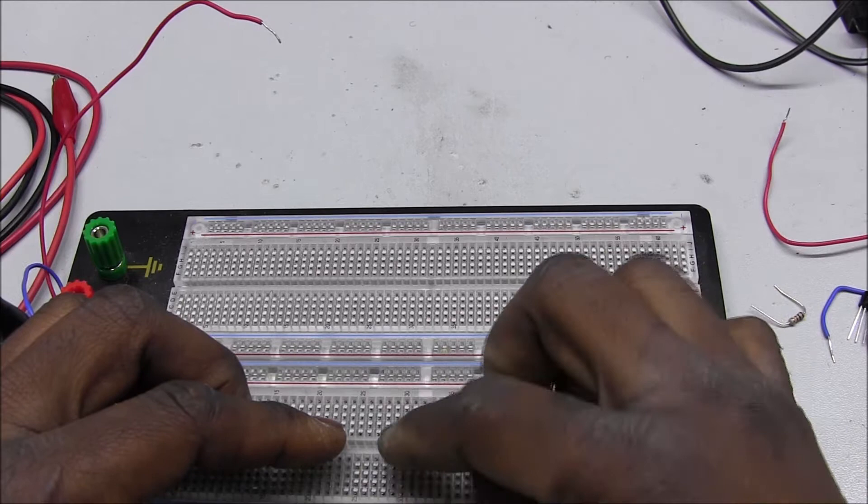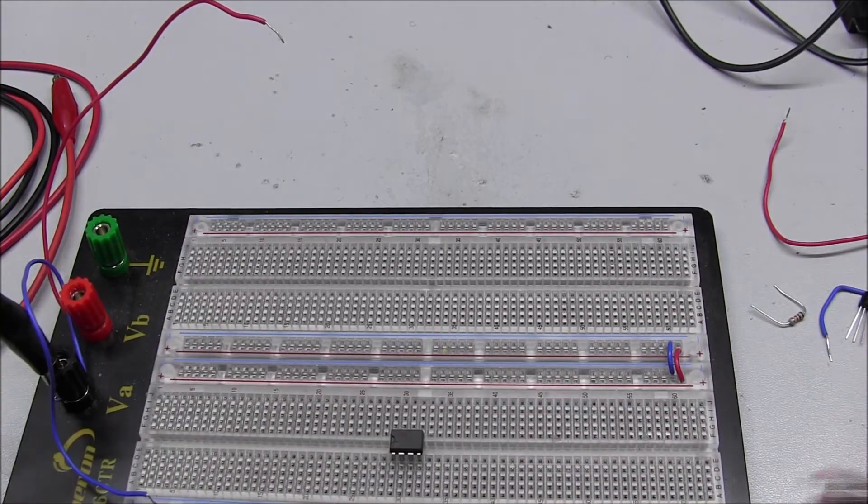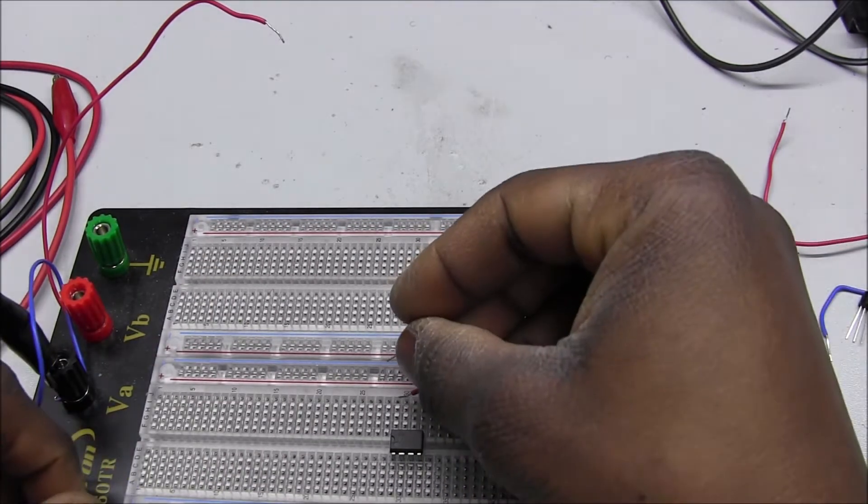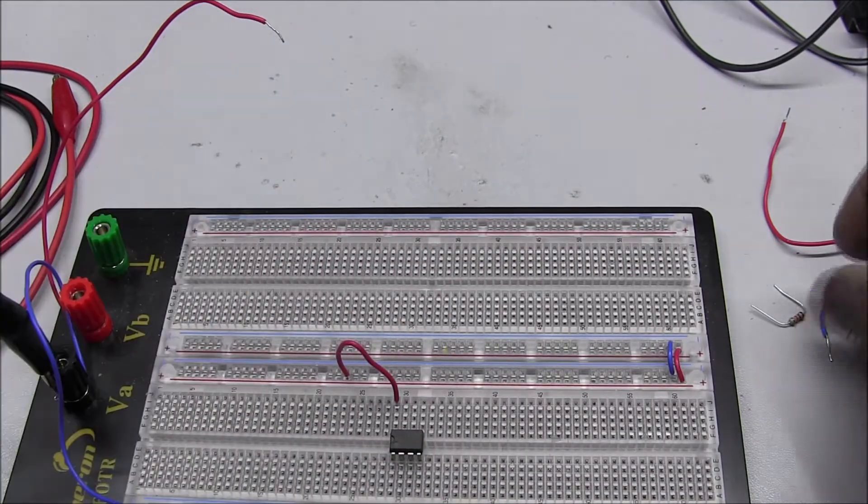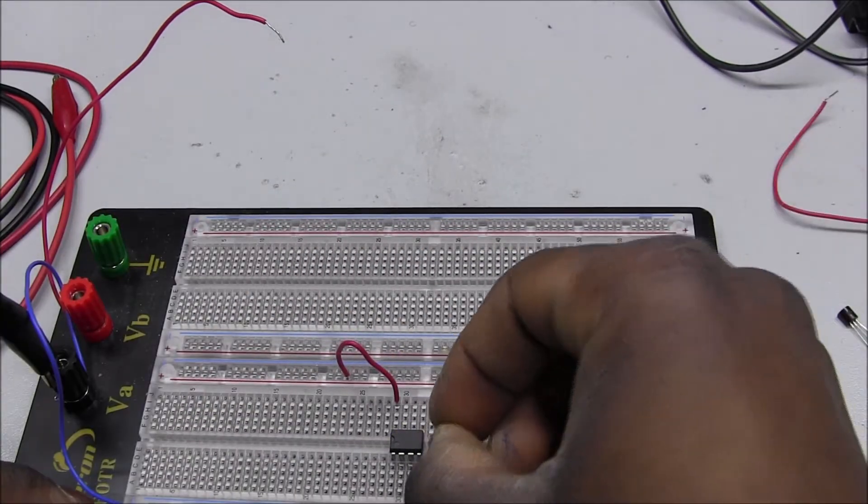The LM358 IC: connect the power. Pin 8 goes to the positive side and then pin 4 is the ground.